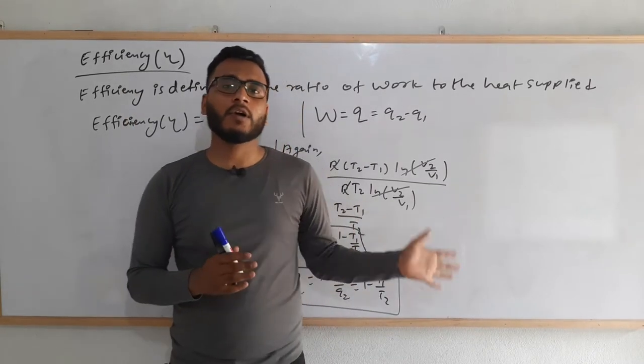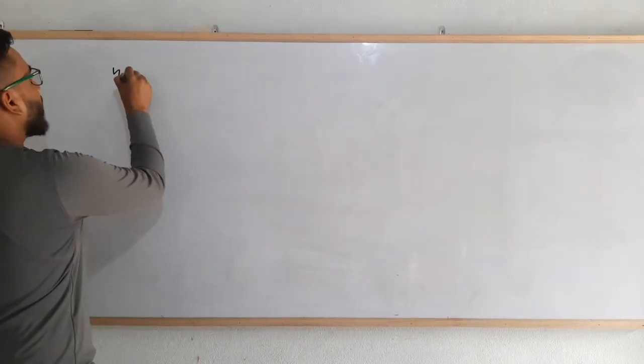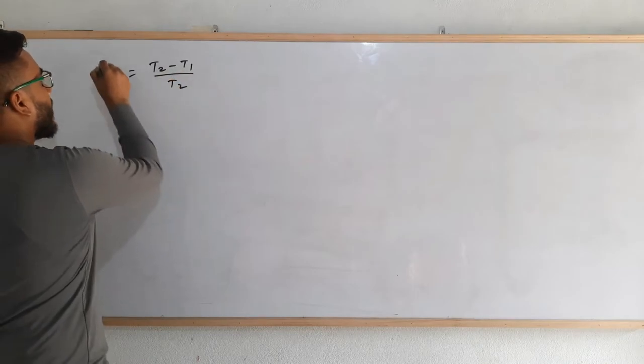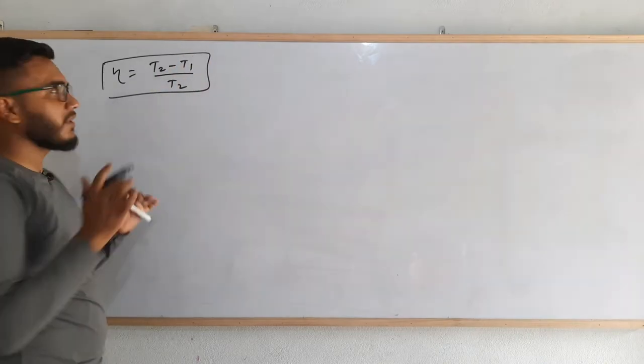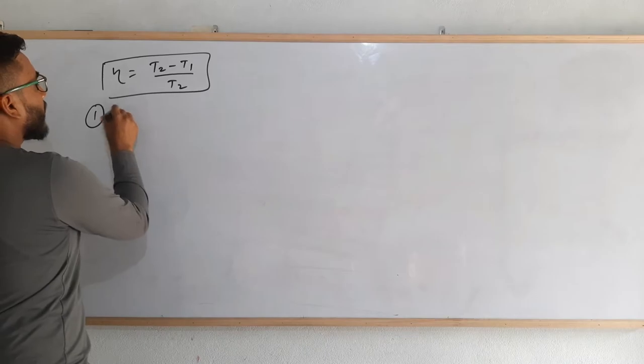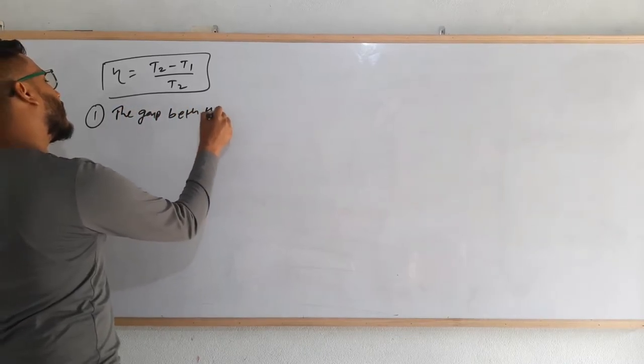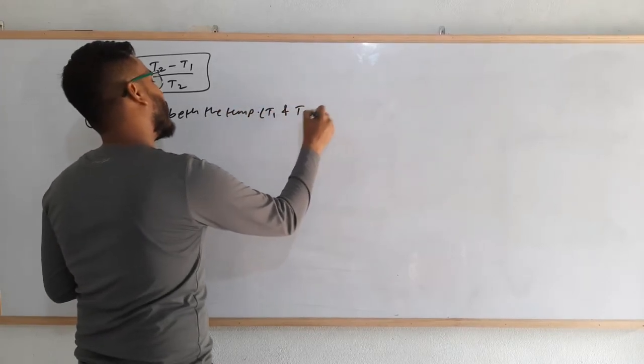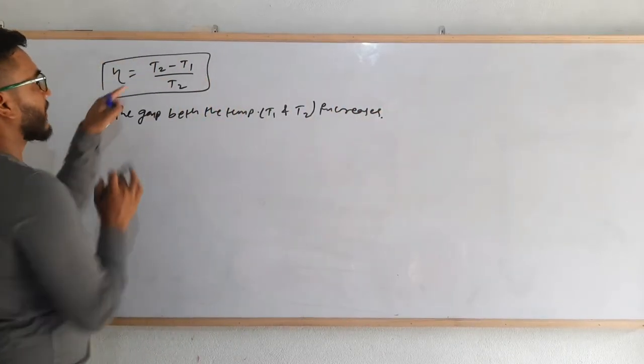Now let's see different cases related to efficiency in terms of temperature. The formula of efficiency in terms of temperature is T2 minus T1 by T2. It depends on the initial temperature and final temperature, T1 and T2. The first condition is: what if the gap between the temperatures, that is T1 and T2, increases?